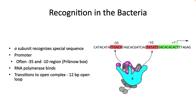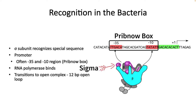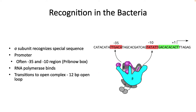Recognition in bacteria: recognition of a promoter in bacteria involves the binding of a sigma factor. For example, sigma 70 recognizes the Pribnow box. This identification is a specific molecular interaction where sigma is making contact with the bases in the DNA sequence in the major and minor grooves. After recognition, RNA polymerase transitions to the open complex, creating a 12 base pair loop in the DNA, and then starts inserting nucleotides.